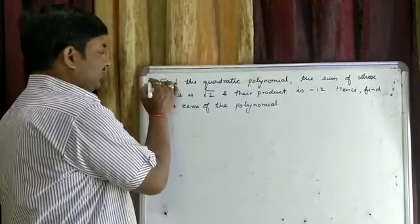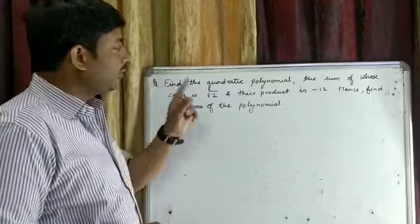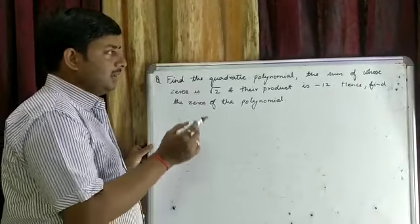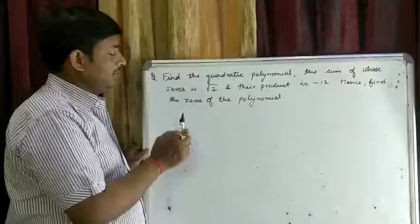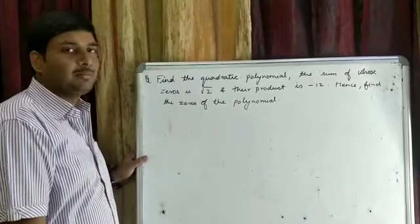Now we will discuss the next question: find the quadratic polynomial when the sum of zeros and their product is given, and hence find the zeros of the polynomial.